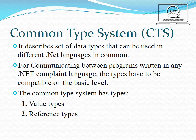Reference types include class types, interface types and array types. The reference type stores a reference to the value's memory address and is allocated on the heap. Reference types can be self-described by pointer types or interface types.